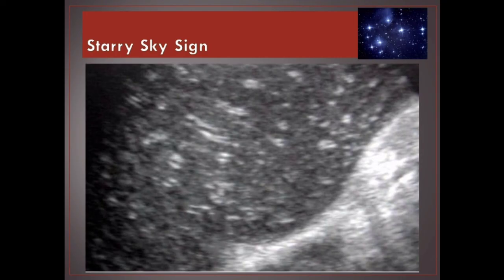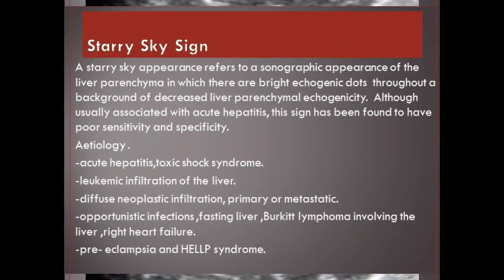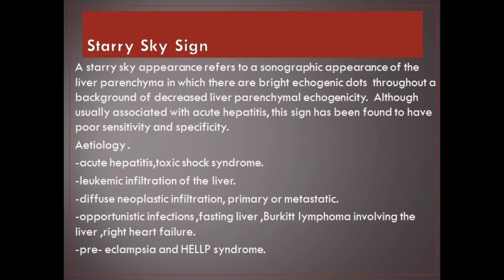Starry sky appearance. It refers to a sonographic appearance of the liver parenchyma in which there are bright echogenic dots throughout a background of decreased liver parenchymal echogenicity. Although usually associated with acute hepatitis, this sign has been found to have poor sensitivity and specificity.